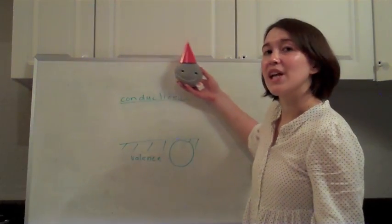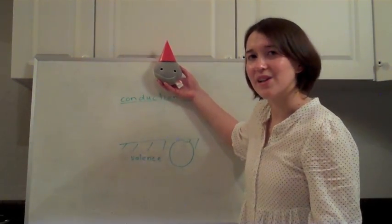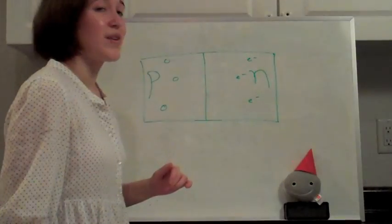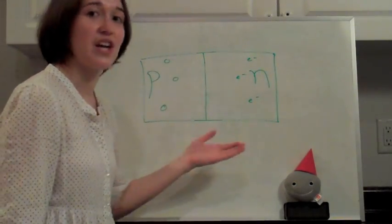And notice this is not quite yet a current. We have electrons that are free to move, but they're not necessarily moving in a net current. So, now we need to get these partying electrons to flow in one direction and create a current.